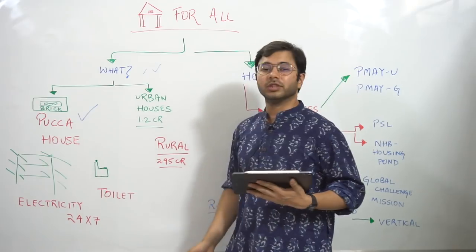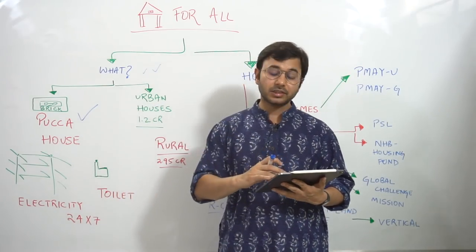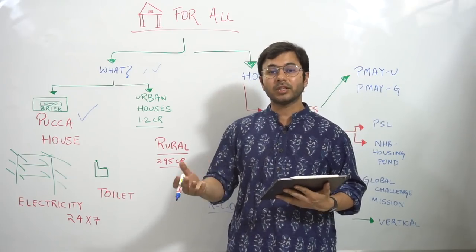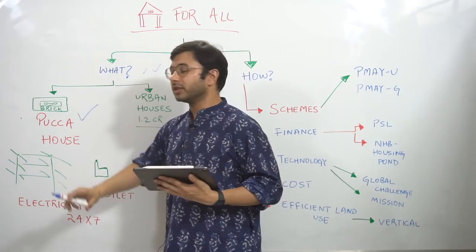So number one is pakka houses. You don't have to provide kacha houses. The objective is also simultaneously to provide or to convert those kacha houses into pakka houses. So this becomes your first point.